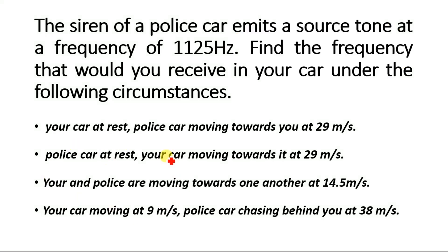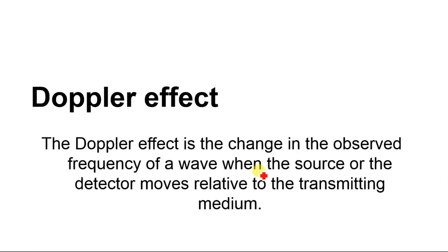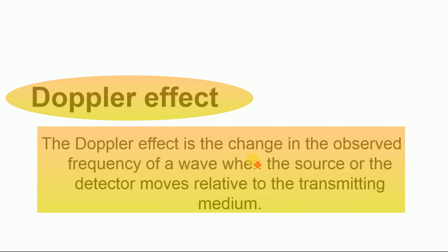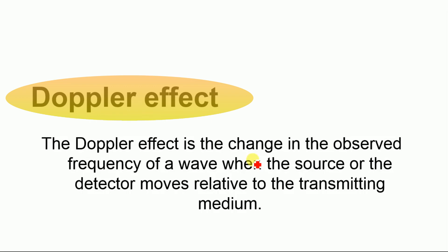First, we will explain the Doppler effect a little. The Doppler effect is the change in the observed frequency of a wave when the source or the detector moves relative to the transmitting medium. For example, if you are standing on the side of a road and a car is passing near you, you will hear the sound differently when the car is moving away from you versus when the car is traveling towards you.